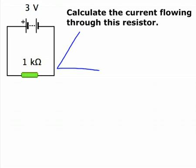In this problem, we're asked to calculate the current flowing through a resistor. We're going to use Ohm's law to do this, and here's a triangle representing the relationship for Ohm's law.